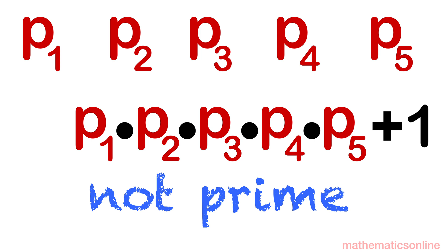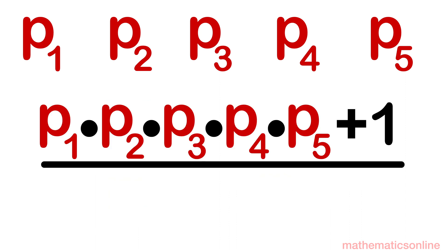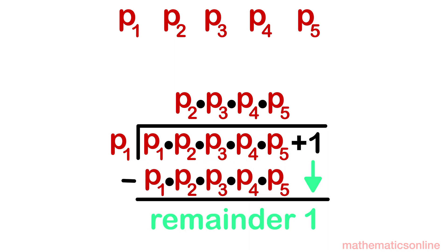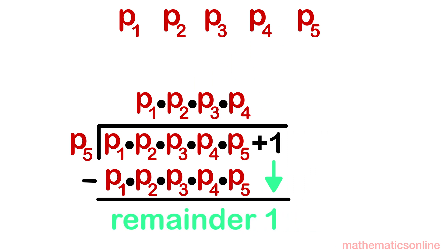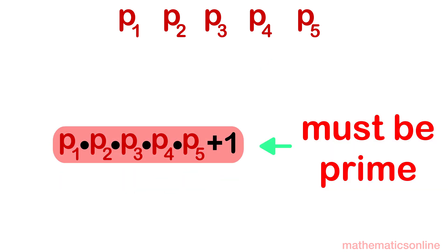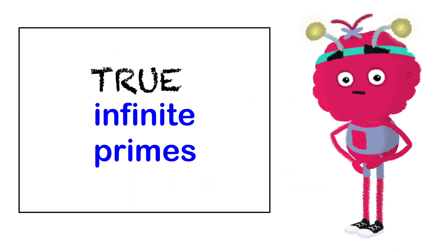In math, every whole number can be divided evenly by a prime number — that's a fact of life. This means one of our five prime numbers must divide p1·p2·p3·p4·p5 + 1 evenly. But if we try to divide it by each prime, we are always left with a remainder of 1 — none of them divides it evenly. There must be a prime number that divides it evenly, so if none of the finite primes does, this means there is another prime that has not been discovered yet. We were wrong to assume there is a finite number of primes. As a result, the other option must be true: there are, in fact, infinitely many primes.